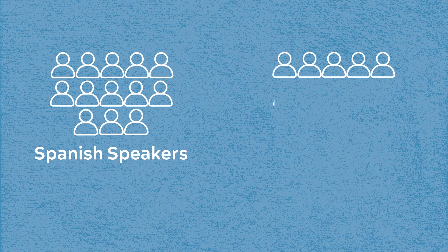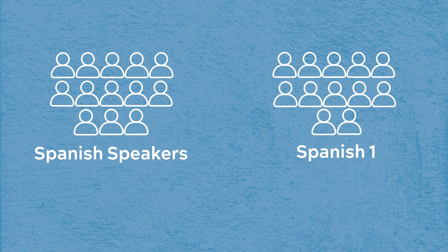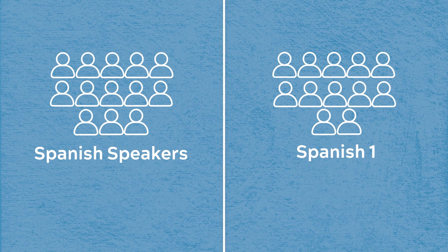One year, we didn't have enough staff or enough periods in the day to offer a Spanish for Spanish speakers class, but we needed it. So my principal created a class that had 13 Spanish speakers in it and 12 Spanish 1 students. And there was just no way to teach them the same content — it wasn't fair to the students. So I essentially divided the class into two.